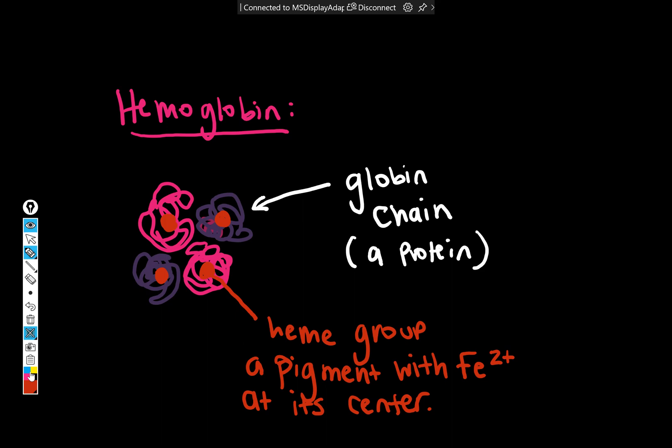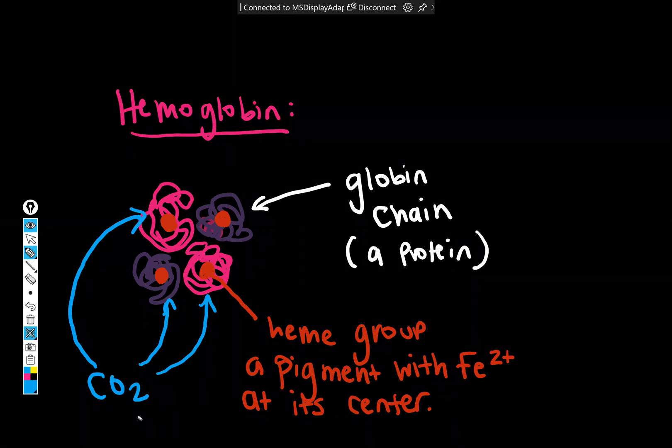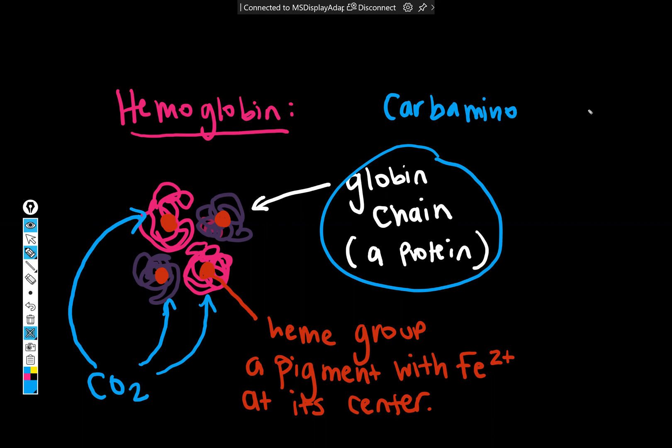So oxygen goes on the heme group. Carbon dioxide binds non-covalently to the globin chains. So when carbon dioxide is bound non-covalently to the globin chain portion, we call that compound carbaminohemoglobin. And I'm running out of room. There we go. Long word.